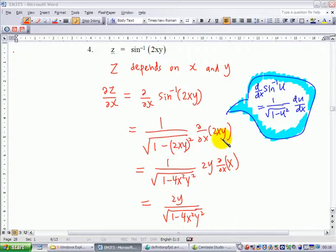So 2y is a fixed number. Pull out the constant factor 2y, then differentiate x with respect to x, which is 1. And in the end you have 2y over square root of 1 minus 4x²y². This is ∂z/∂x.